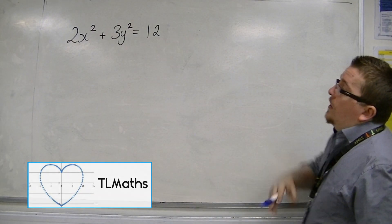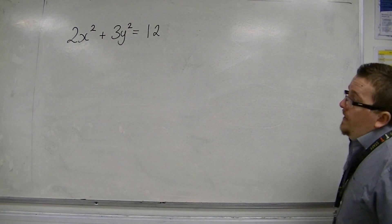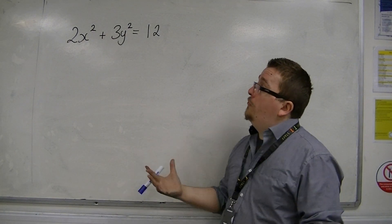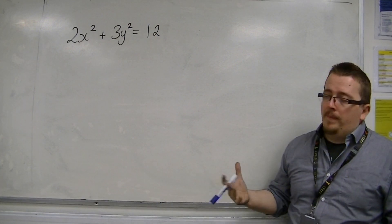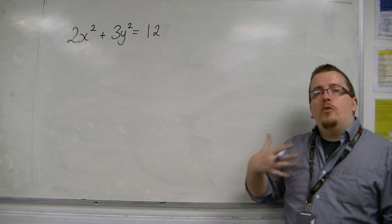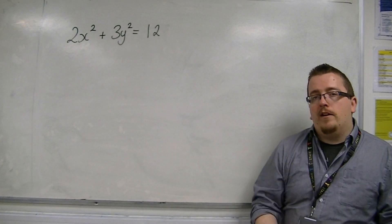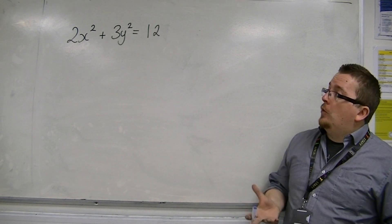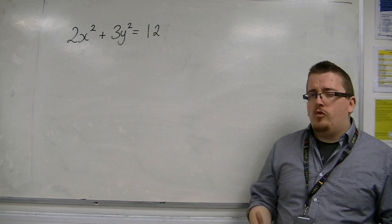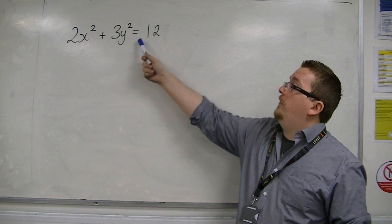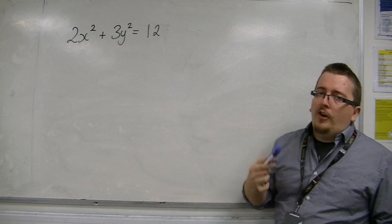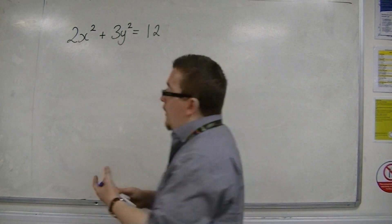So this is the equation of an ellipse. We have 2x squared plus 3y squared is equal to 12. Now it's not in the format that we particularly like when we look at the equation of an ellipse — we want to make it equal to 1. So what I'm going to do is divide through by 12.